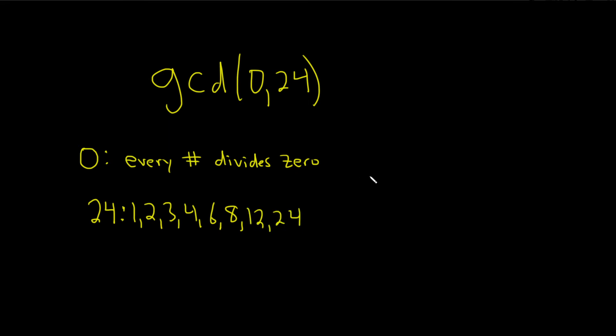These are all the divisors of 24. We could have just looked at it and said 24 is the biggest one. 24 is the biggest divisor of 24, and 24 also divides 0. So it's the greatest common divisor of these two numbers.